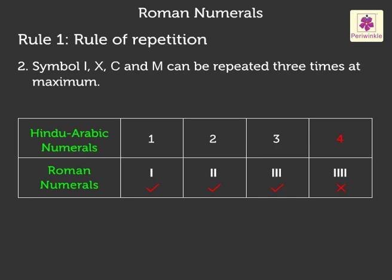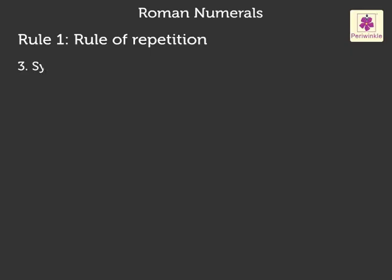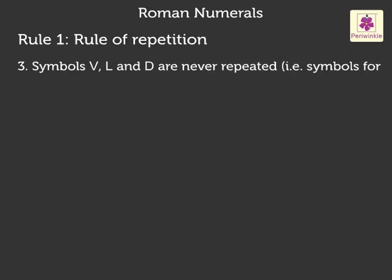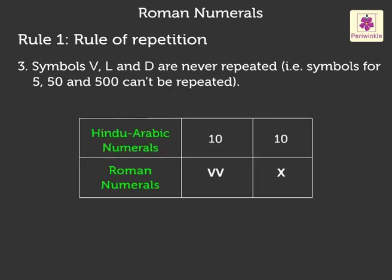Note that we do not write 4 as IIII. The symbols V, L, and D are never repeated — that is, the symbols for 5, 50, and 500 cannot be repeated. This means that we do not write the number 10 by repeating V, but as X.